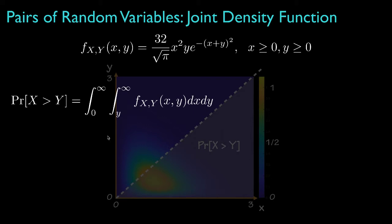we'd need to evaluate the integral over the region. And one way to do that is to integrate over the variable X from Y to infinity and then integrate over Y from zero to infinity. And if we do that for this particular density, we should get the value equal to 11 sixteenths or .6875.